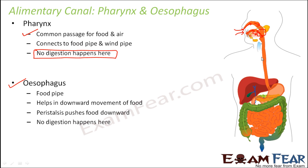After passing through the pharynx, food moves into the food pipe. The food pipe helps in the downward movement of food. Pharynx and esophagus are the two parts of the alimentary canal where no actual digestion happens — they just help in moving the food to the place where digestion is going to happen, transporting it from mouth to stomach. In the esophagus, muscles on the walls make a movement called peristalsis — the expansion and contraction of these muscles pushes the food downward. Finally, the food reaches the stomach, where the main story of digestion begins.